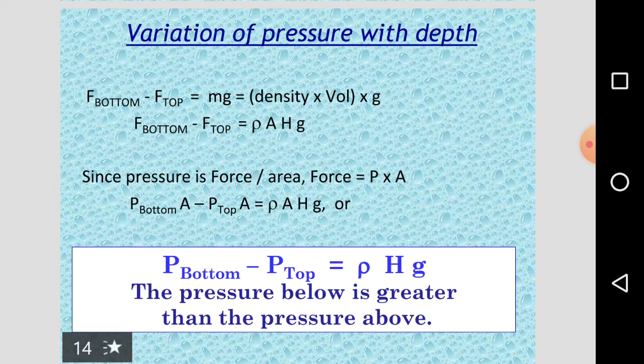Variation of pressure with depth you can easily find out. Force bottom minus force at the top is equal to mg. Force bottom minus force at the top is equal to density into area into height into g, it is gamma a h. Since pressure is force by area, force is equal to pressure into area. Therefore, P_bottom into A minus P_top into A is equal to ρgh into A, or gamma h.